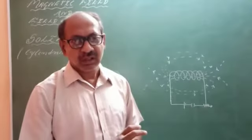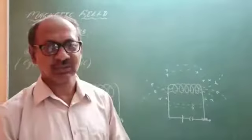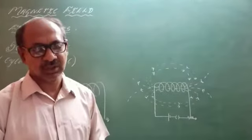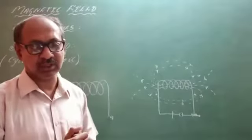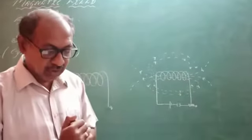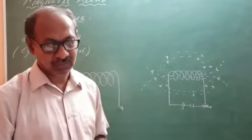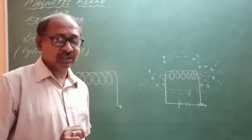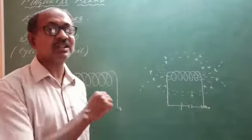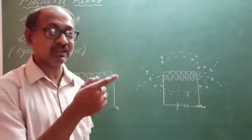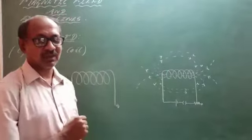Now let us consider a conducting wire, or a conducting material, or a conductor that is wound in the form of a cylindrical coil. Whose diameter is less compared to its length.